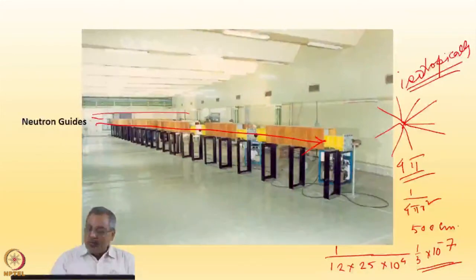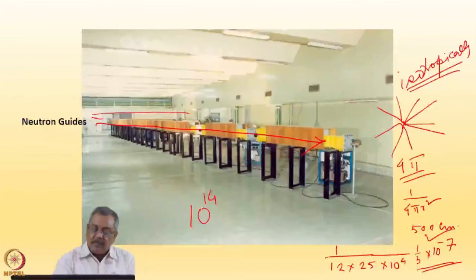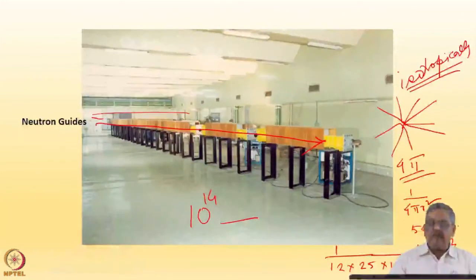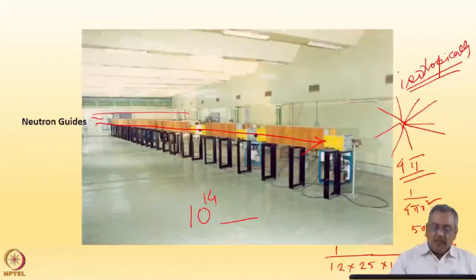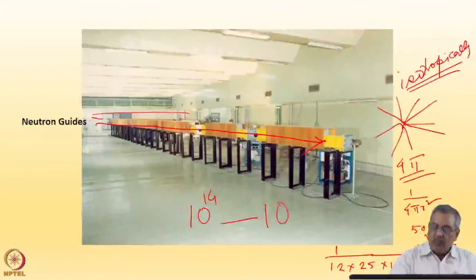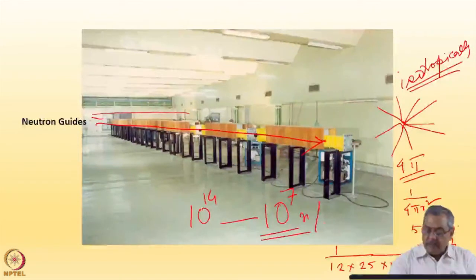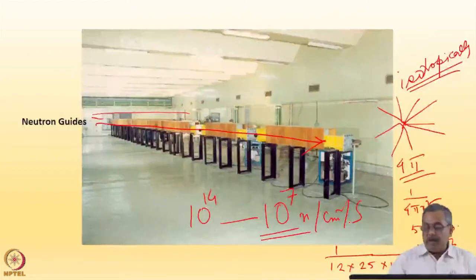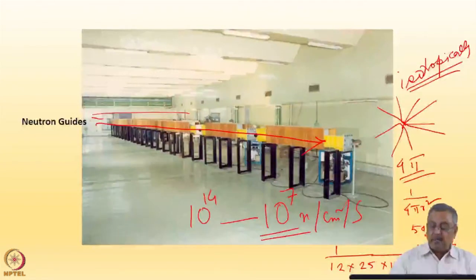This is too small a value. If you start with 10 to the power 14 neutrons per cm² per second, and allow them to travel 5 meters — typically the distance to reach the outside of the reactor block — you get only around 10 to the power 7 neutrons per centimeter squared per second. Neutron intensity falls very fast because they are coming out isotropically.